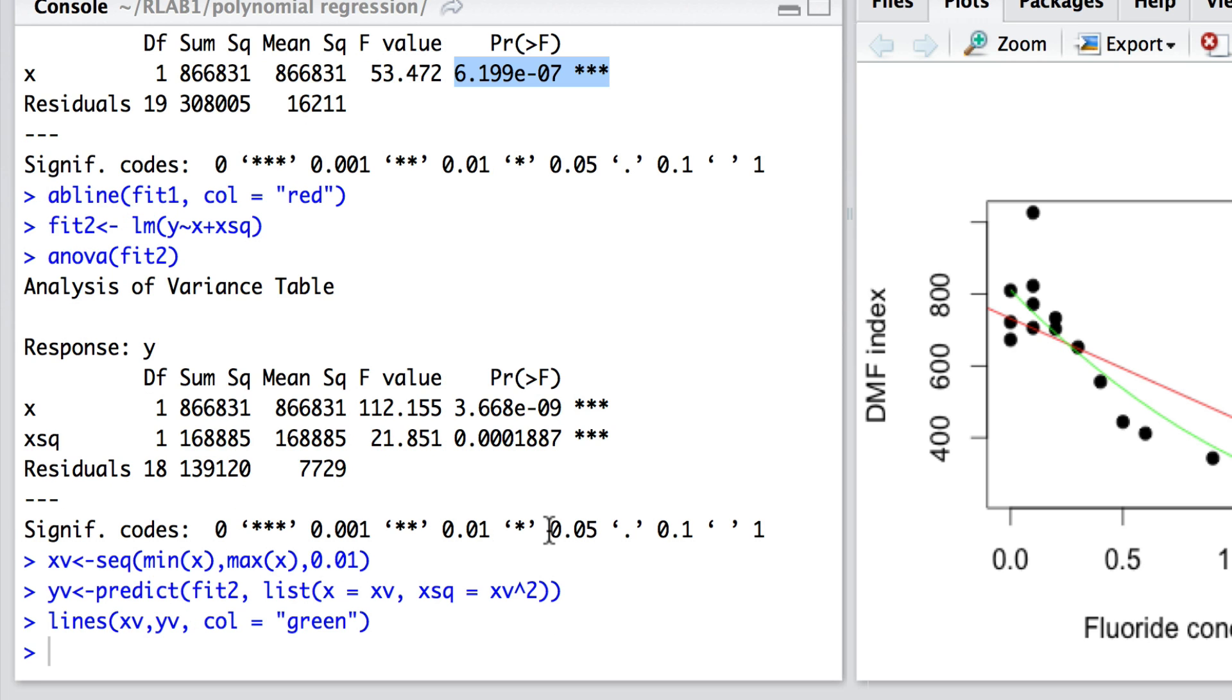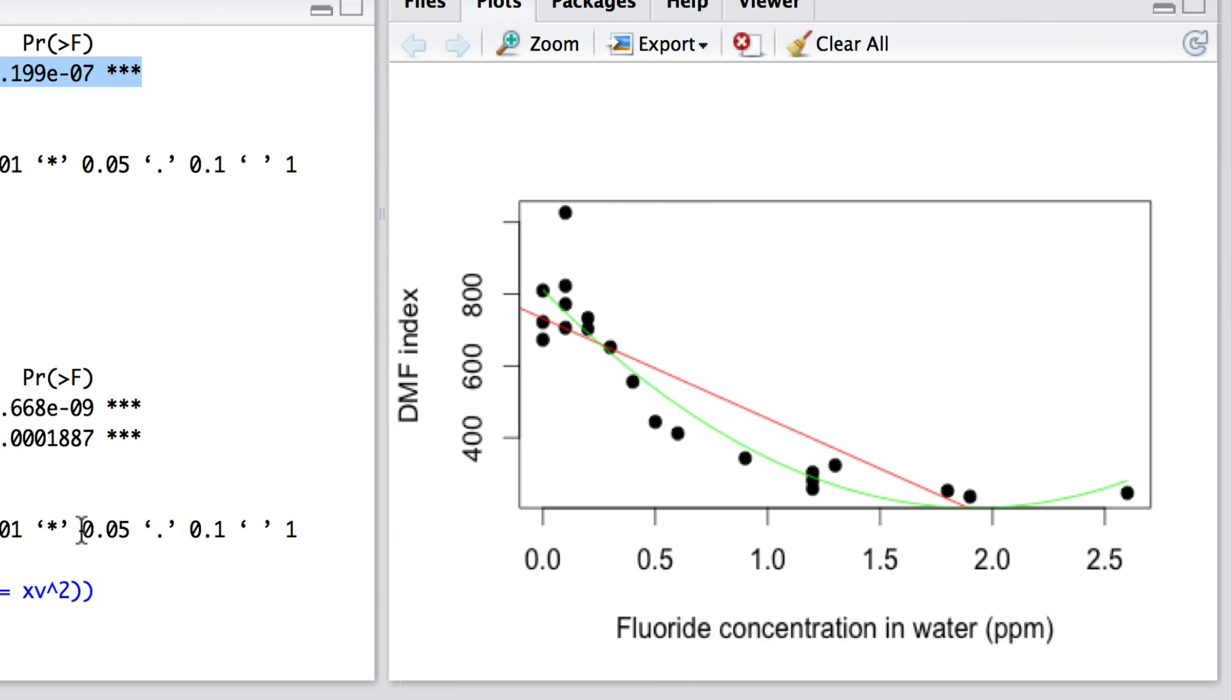And now we can simply draw those lines on—and I'm drawing them in green—and we will see here that we have explained some of that curvature in our data. We've got this nice fit of a quadratic.